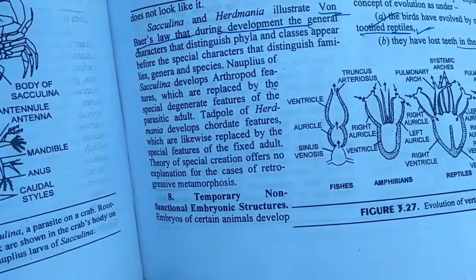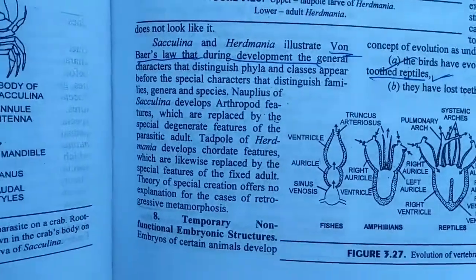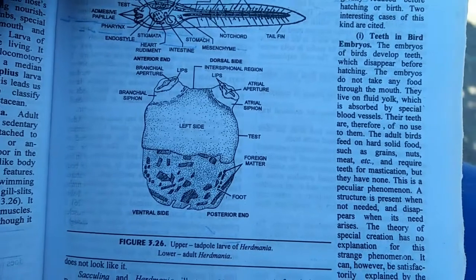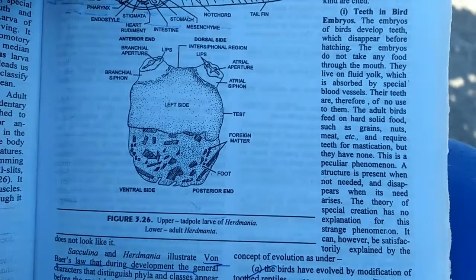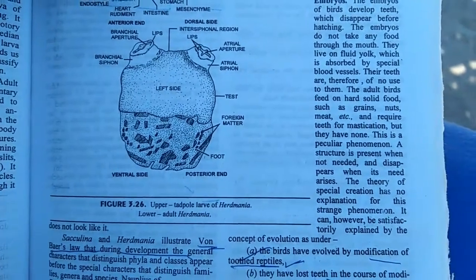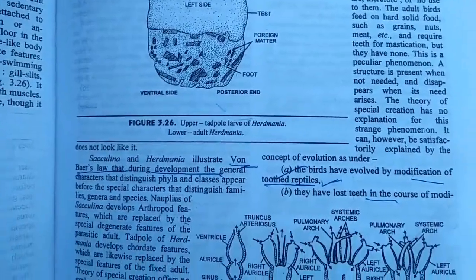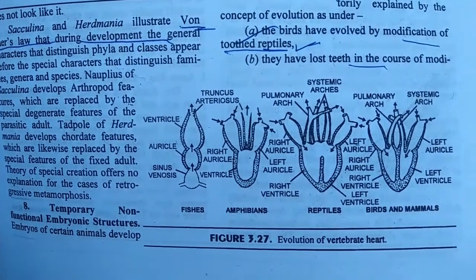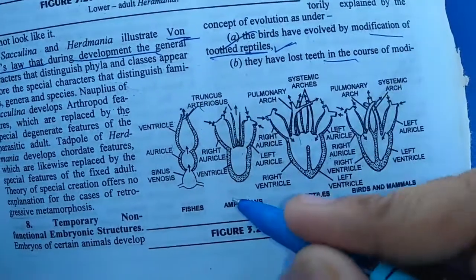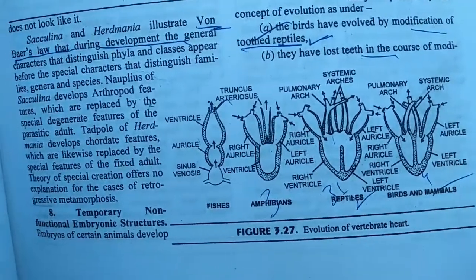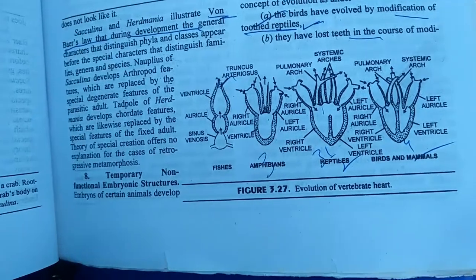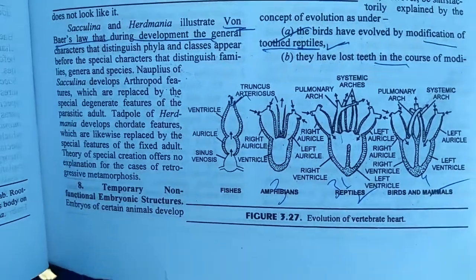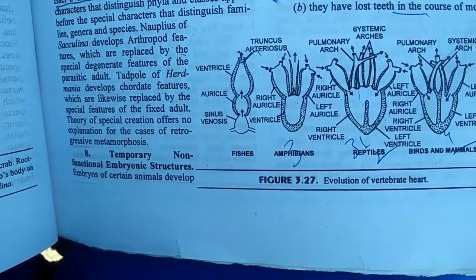The last embryonic evidence is the temporary non-functional structures. Temporary embryonic structures may be formed, such as the egg tooth in birds — called the caruncle — meant for breaking the shell of the egg. Whale embryos also have hair, but it becomes vestigial in adult life. Also, anatomical structures develop in stages: fish have a two-chamber heart, amphibians have a three-chamber heart, reptiles have three-and-a-half chambers, and birds and mammals have a four-chamber heart. In early embryonic development it is a two-chamber heart in all cases, then it is modified into three chambers, then three-and-a-half, then four chambers. This gives us a very close relationship between different animal phyla.